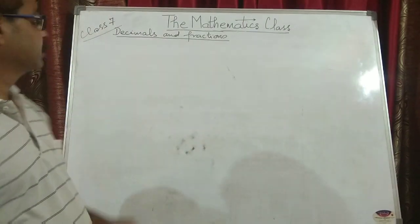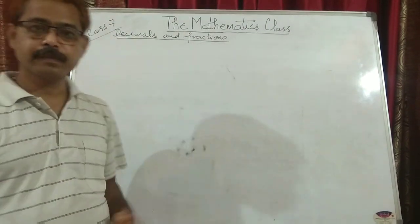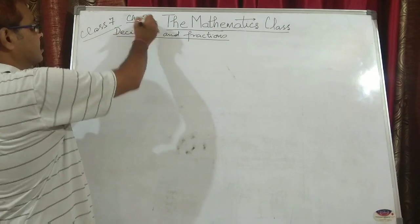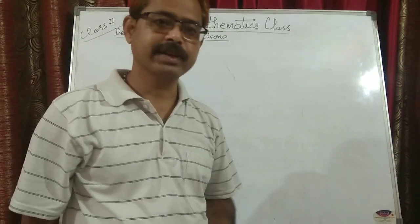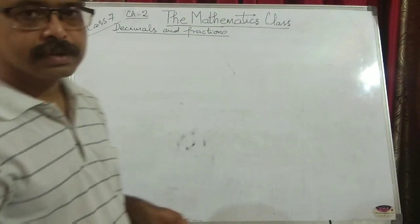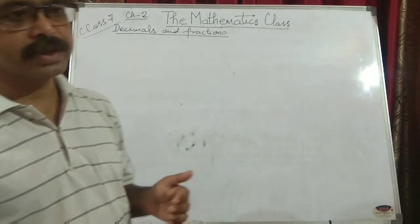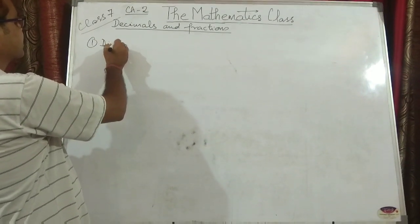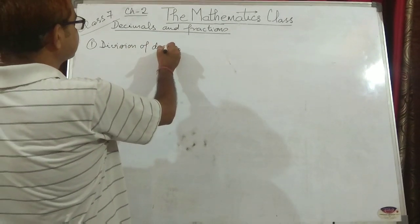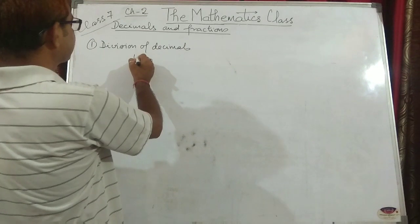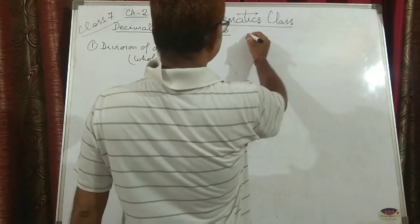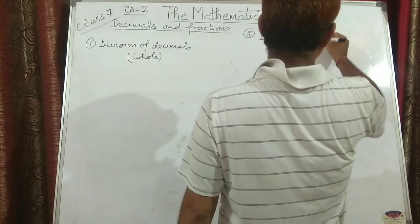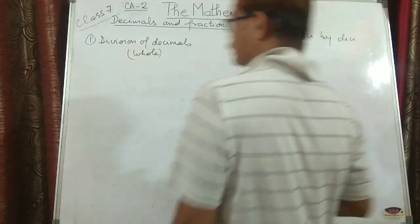Welcome to the mathematics class. This class is for class 7. Previously we were doing chapter 2, that was decimals and fractions, and this class is in continuation with decimals and fractions. We have discussed up to the topic of multiplication. Now we will discuss division of decimals. First, division of decimals by whole numbers, and then division of decimals by decimals. Let's take an example.